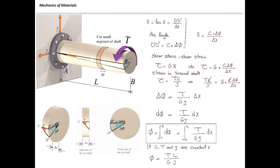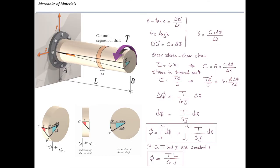However, this simplified equation has restrictions: torque must be constant, G must be constant, and J must be constant. That means there should be just one torque, a constant cross-sectional area, and the element should be made from just one material.